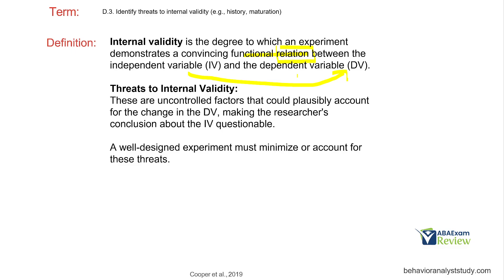What other things can happen to make us question our control? These are called threats to internal validity. They're uncontrolled factors — keyword being uncontrolled — that could account for the change in the dependent variable or behavior. What could make us question the effects of our independent variable? If I start an extinction procedure, I want only my extinction procedure to be the thing changing my behavior or dependent variable. All these threats are things outside of my control that could make me question how effective I am being.